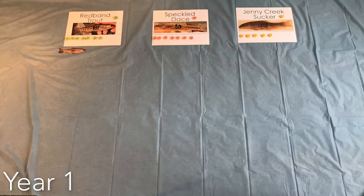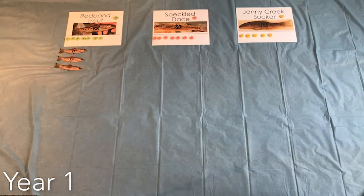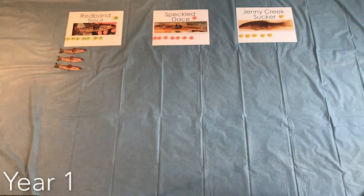Looking at the redband trout, the population started with one fish and that one fish ate seven pieces of food. It only needs three to survive. That means it ate four extra pieces, allowing it to reproduce by two fish. Now the total population of redband trout is three fish. Go ahead and write that on your data sheet for year one.